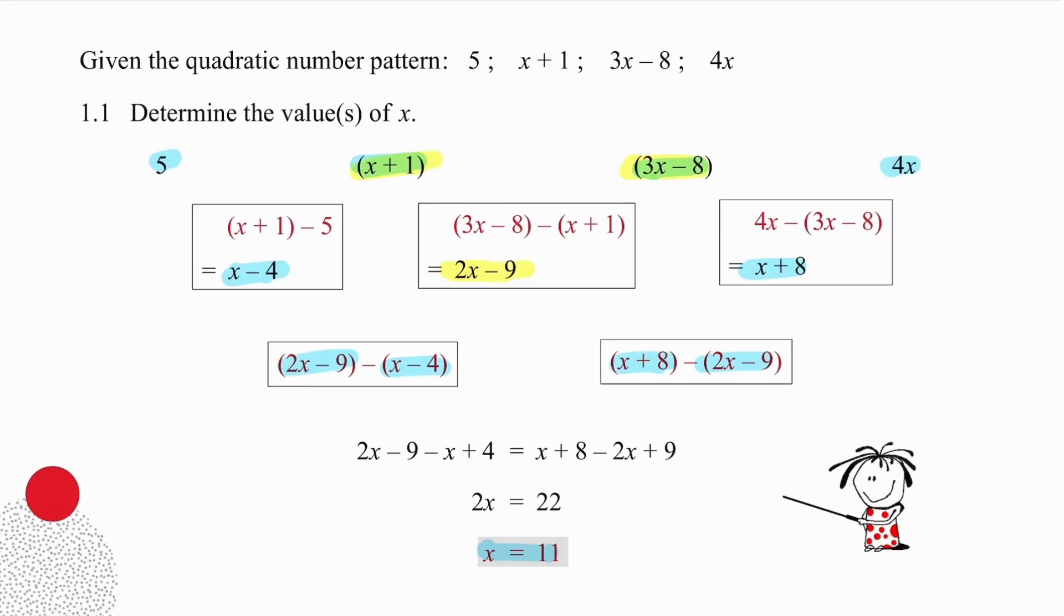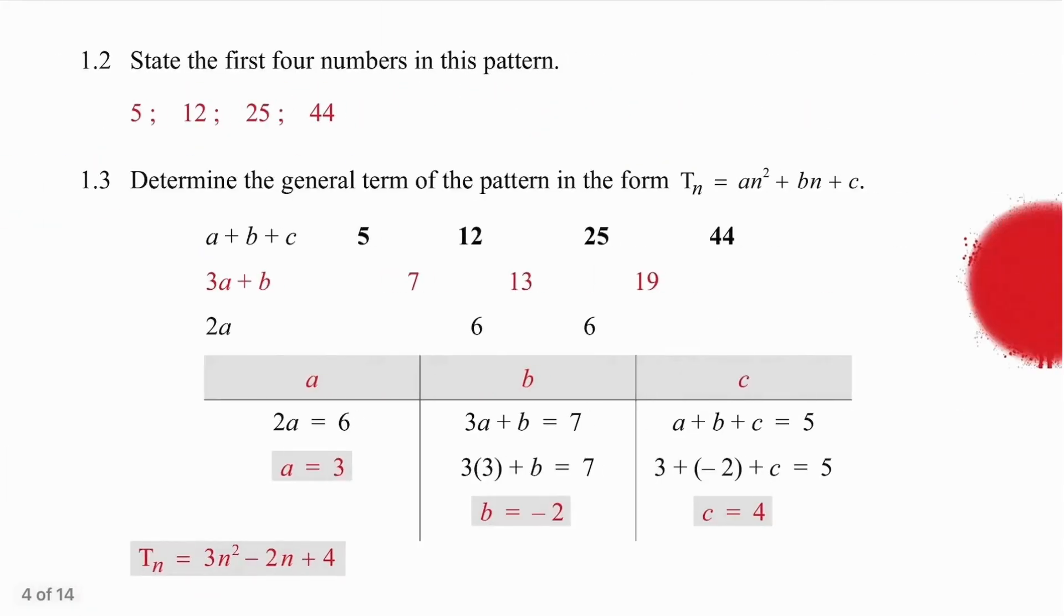11 is not a term in the sequence. It is the value that helps us to generate the terms. So, when we are asked to work out, in the following question, what the values are of the terms, you're simply going to take 11, substitute it to get 12. Take 11 again, you're going to get 33 minus 8, which is 25. And then, finally, you're going to get 44. So, when asked what the terms are, simply substitute the value of x.